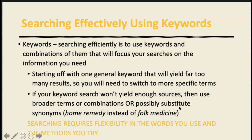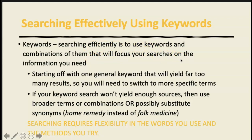One thing we need to talk about is searching effectively using keywords. When we search using keywords, we search efficiently by using those keywords and different combinations of them to focus your search on the information you need. Google has spoiled us — we're used to just typing something in and getting the world. Searching databases is not that easy. You have to be patient, be flexible, try different keyword combinations, and I always have a piece of paper beside me where I jot down what I just searched.